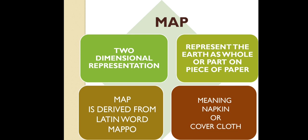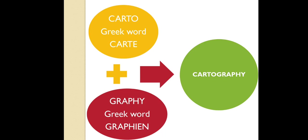The word 'map' is derived from the Latin word 'mappo' which means napkin or a cover cloth. Earlier maps were drawn on cloth, napkin, or on tree leaves. The science of making or drawing maps is called cartography. The word 'carto' is derived from the Greek word 'karte' which means leaf or sheet of paper or map.